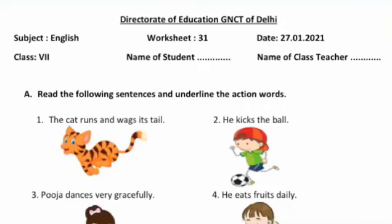Hello lovely children, how are you doing? This is worksheet number 31 and this worksheet is of English for class 7, and this is for 27th January 2021.